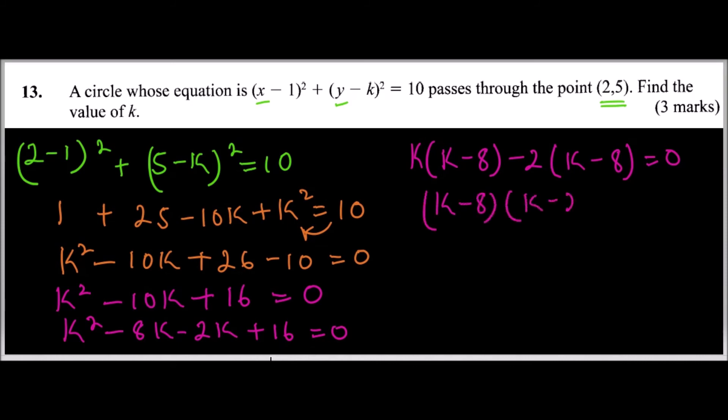Since we are told to find the value of k, then when we get there what we say is that either k - 8 = 0 or k - 2 = 0. So we take 8 to the other side, we have k = 8, and we also take 2 to the other side, k = 2. So k is satisfied by two values: 8 and 2, and with that you get 3 marks.